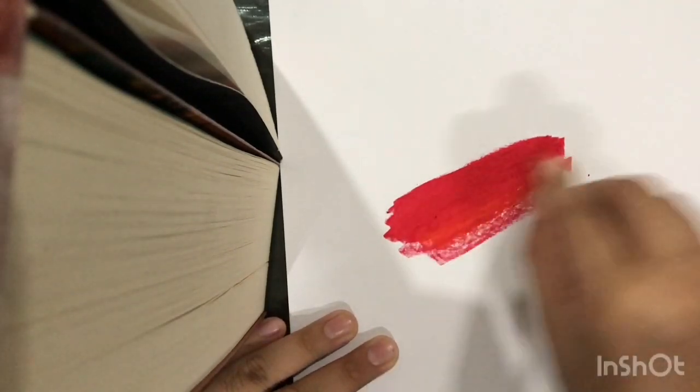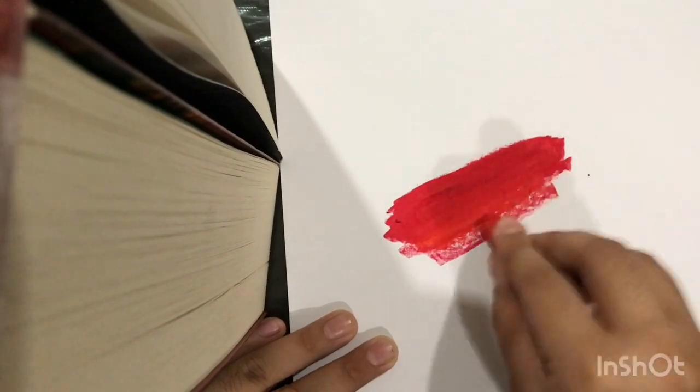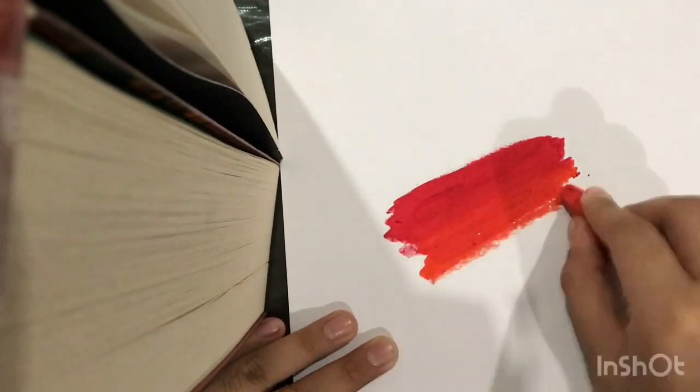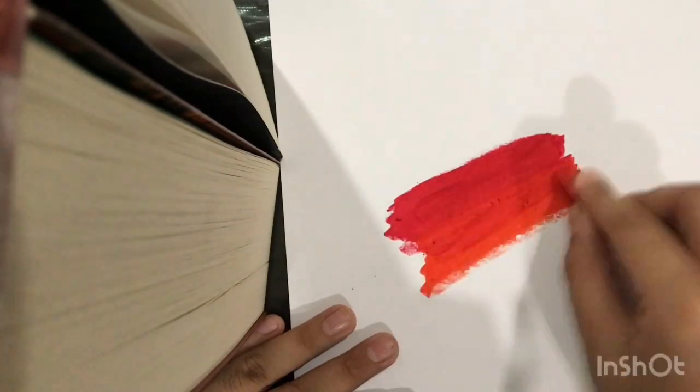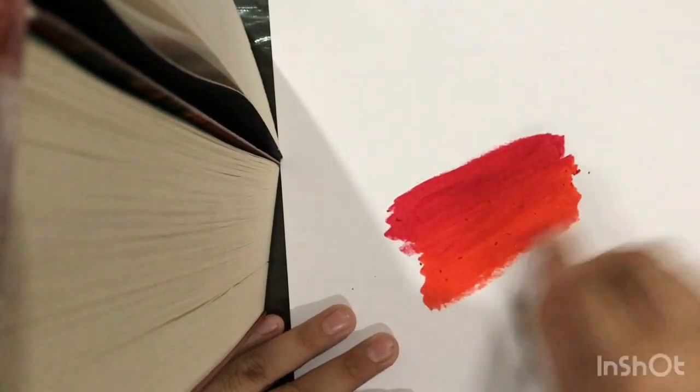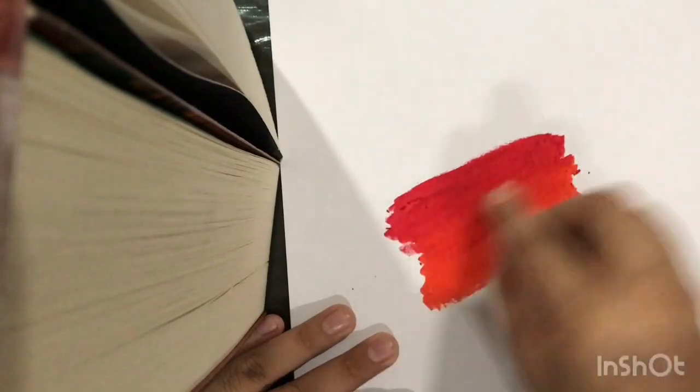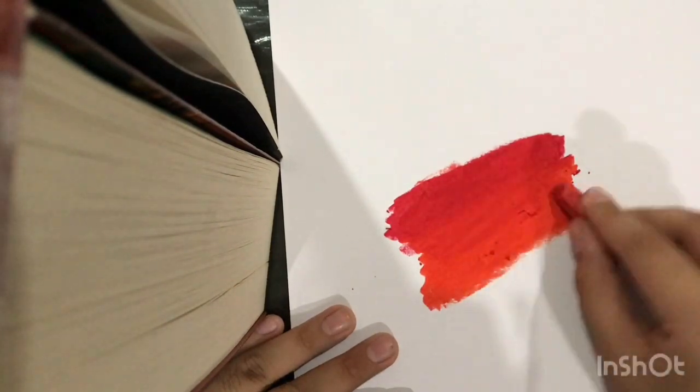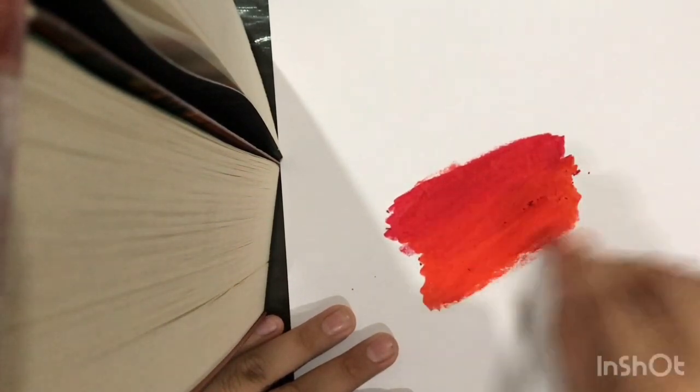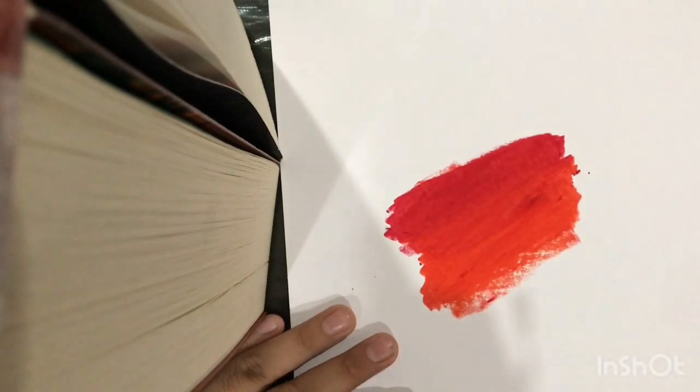And then you can use the next lighter shade, just mix with it as I'm doing. I'll recommend you to do a circle pattern, like you can just circle it and then it'll come out to be good. You can use lighter shade on the darker one also so that it looks like proper mixing.